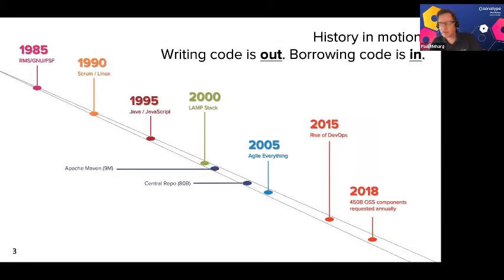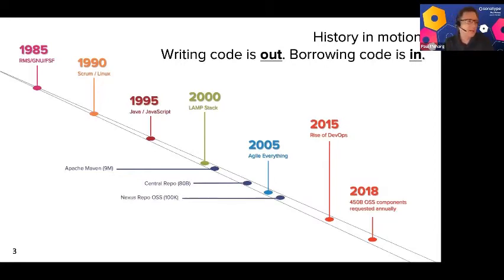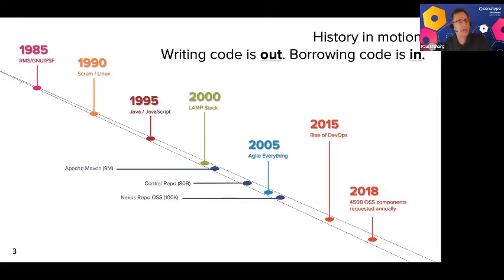Soon after, they created something called Central Repo, or Central Repository, where a lot of open source Java components are stored. We then created a repository that you could have inside your network, which allows you to have that same type of functionality inside your network instead of relying on external repositories.